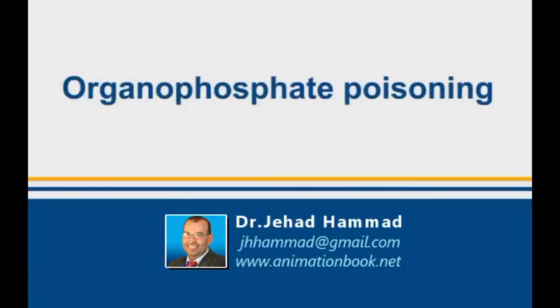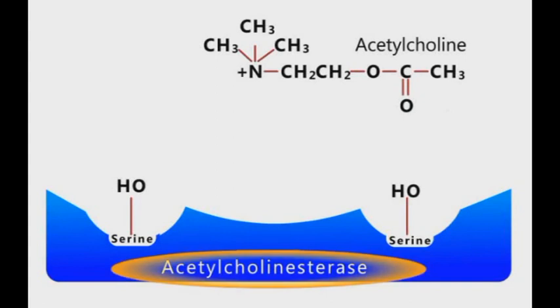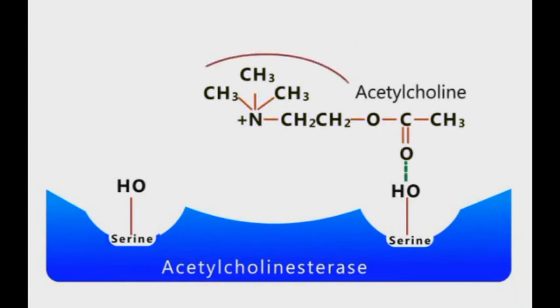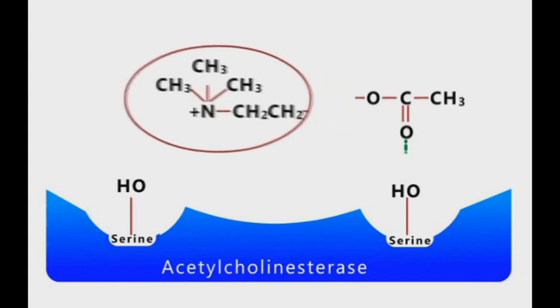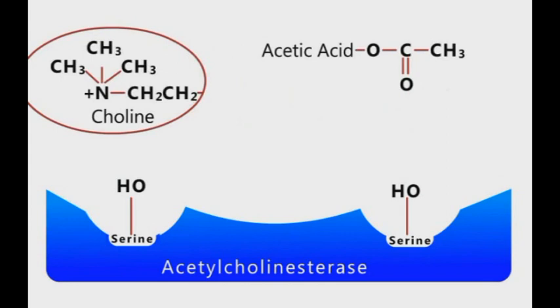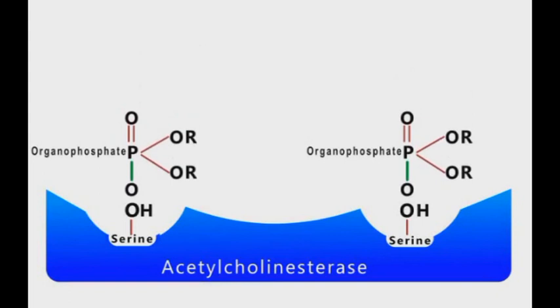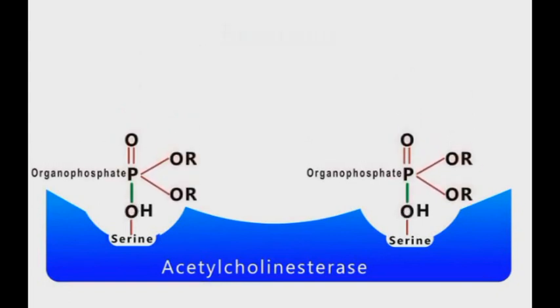Organophosphate poisoning. Acetylcholinesterase enzyme in the synaptic clefts and neuromuscular junctions specifically cleaves acetylcholine neurotransmitter bonds into choline and acetic acid molecules. Organophosphate compounds bind to serine residues of acetylcholinesterase and inactivate them, rendering the enzyme inactive. As a result, a huge amount of acetylcholine molecules accumulate at the neuromuscular junction and synaptic clefts, producing serious physiological effects.